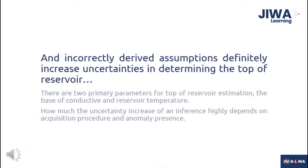There are two primary parameters for estimating the top of reservoir: the base of conductive and reservoir temperature. The base of conductive is the base of the low-permeability zone located over an adjacent geothermal reservoir. The reservoir temperature, derived from geothermal meter information, is used to calculate the boiling point to depth curve based on the steam table, to extrapolate the top of reservoir elevation to the temperature.